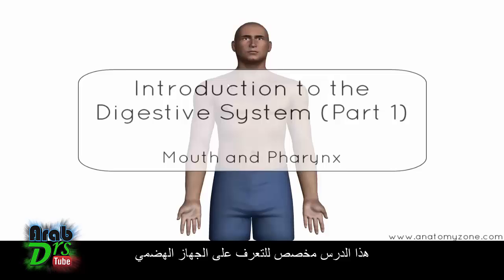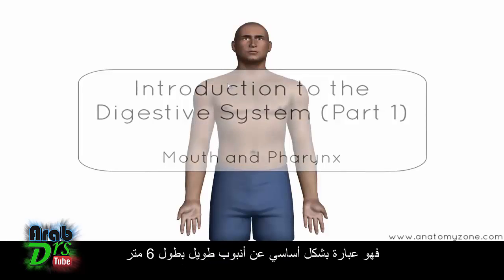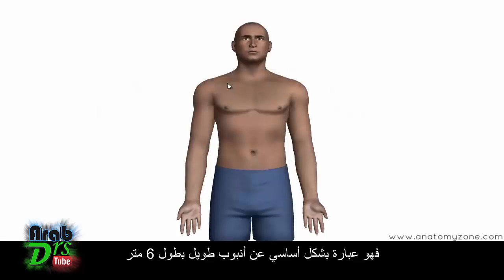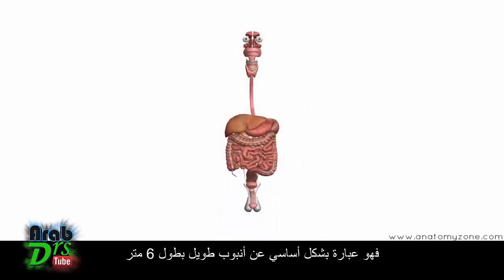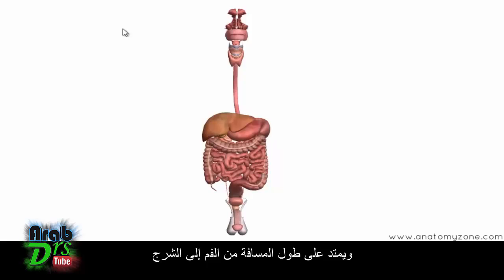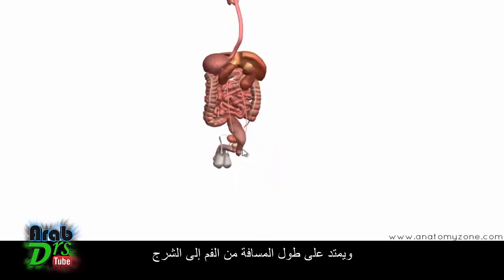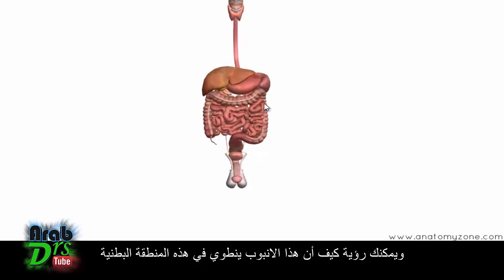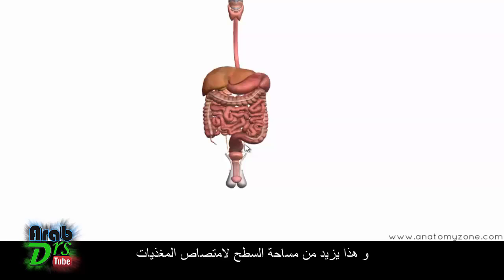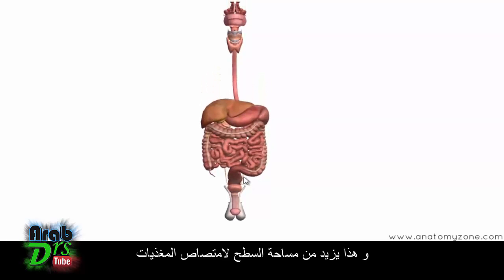This is an introduction to the digestive system. The digestive system is essentially a long tube, about 6 meters long, running all the way from the mouth right down to the anus. You can see how this tube is folded in the abdominal area, which increases the surface area for absorption of nutrients.